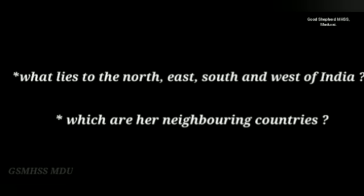Some questions: What lies to the north, east, south, and west of India? The Himalayan mountain range lies to the north. The Bay of Bengal lies to its east. The Indian Ocean lies to its south and the Arabian Sea to its west. The neighboring countries of India are China, Nepal, Pakistan, Bangladesh, Myanmar, Bhutan, and Sri Lanka. Sri Lanka is an island country.